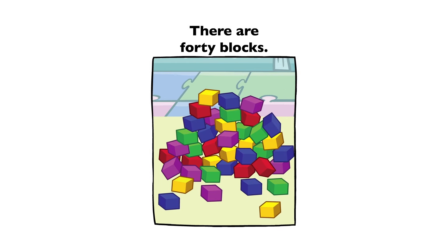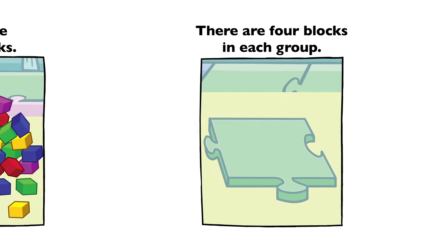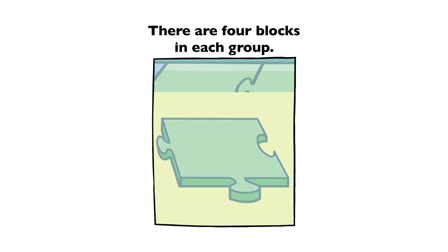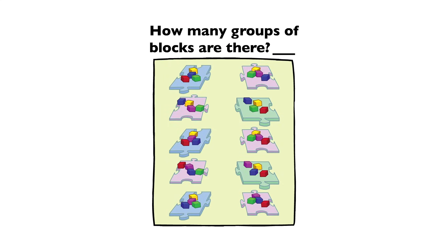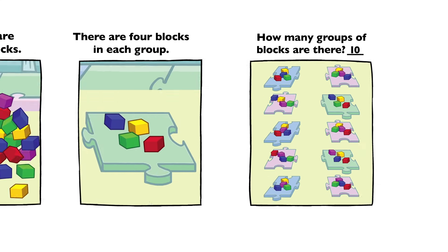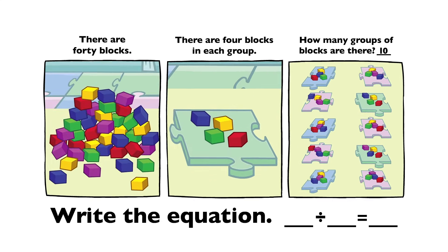There are 40 blocks. There are 4 blocks in each group. How many groups of blocks are there? 10. 40 divided by 4 equals 10.